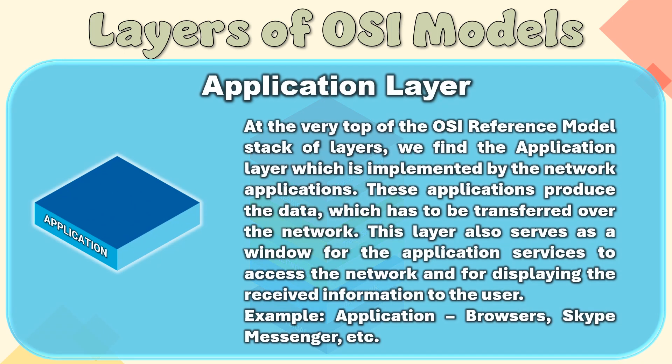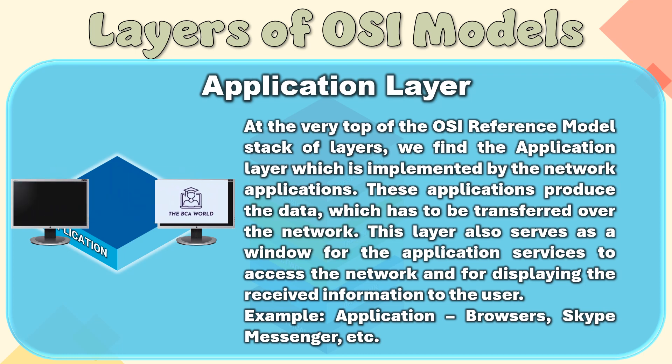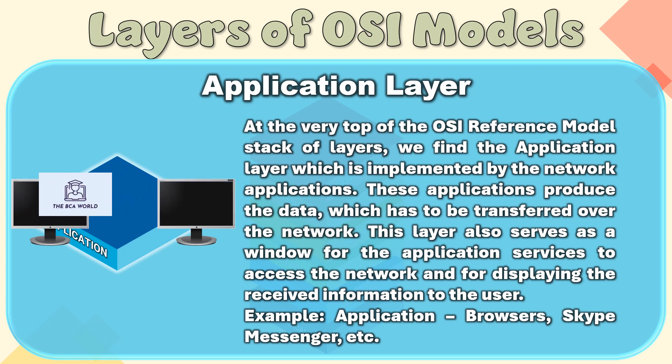Layer 7 – Application Layer. At the very top of the OSI reference model stack of layers, we find the application layer, which is implemented by the network applications. These applications produce the data which has to be transferred over the network. This layer also serves as a window for the application services to access the network and for displaying the received information to the user.